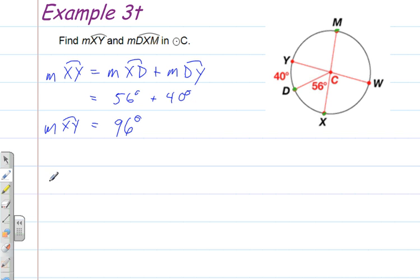So to find the measure of arc DXM, we have to add the measure of arc DX, which we know from the last example is 56 degrees, plus the measure of arc XWM. Substitute the numbers: 56 degrees.